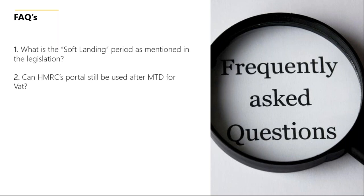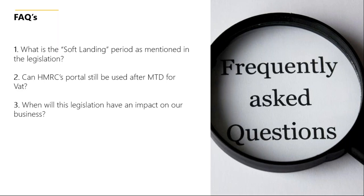The second question: can the portal that most organizations still use be used after this comes into play? No — it's as simple as that. It would constitute a break in the digital transfer if you're copying and pasting your codes in. Similarly with paper-based filing — you simply cannot do it as of the first of April, or more precisely as of your first submission after the first of April. Question three: when will it have an impact? It will apply for your first full VAT period that starts on or after the first of April. For example, if you file quarterly with a 31st of March 2019 end date, your first VAT quarter under the legislation would be from the 1st of April.